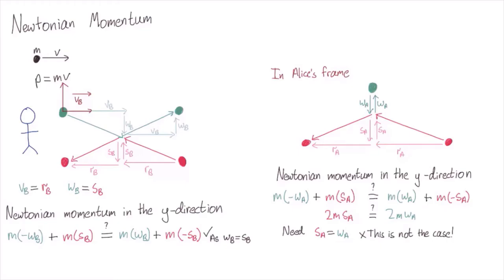It turns out that if we look at this problem and see quantitatively how velocities transform between frames, we can get something that is conserved in both Alice's and Bob's frame. This is p = γmv.